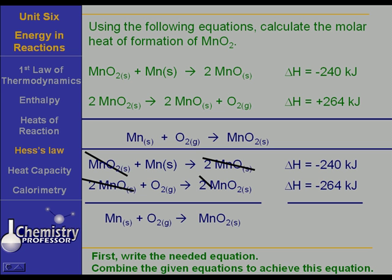You have Mn solid plus O2 gas yields MnO2 solid. And it's constant heat summation. So you add these heats together. And the delta H is minus 504 kilojoules.